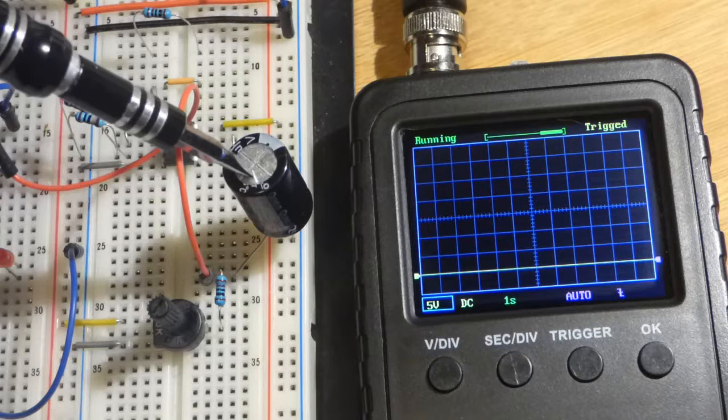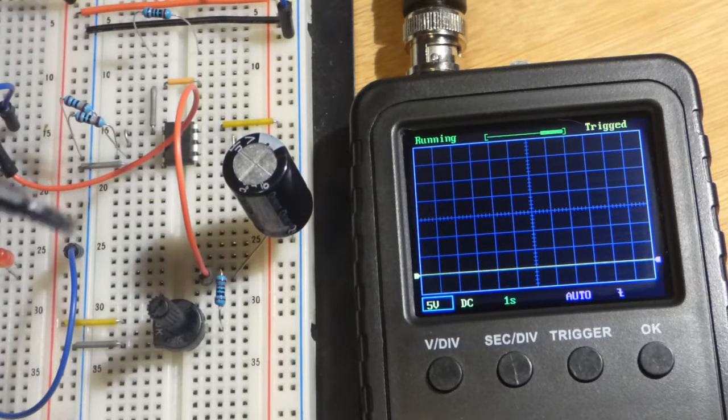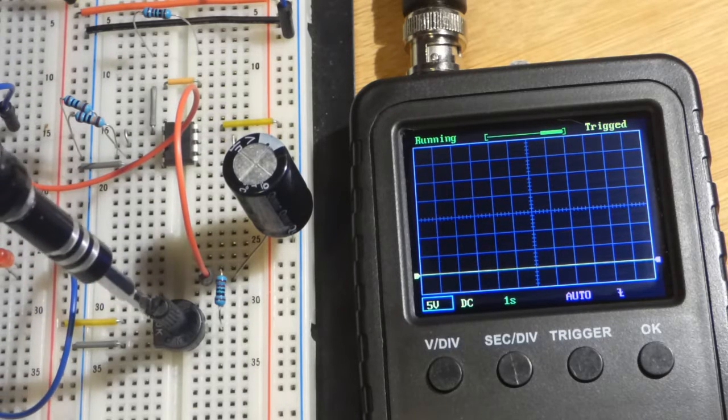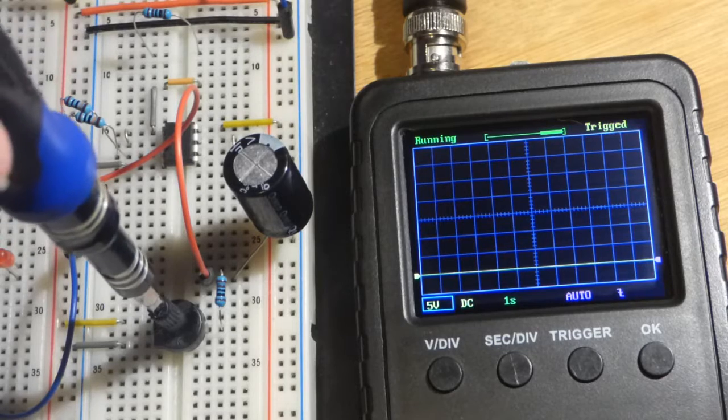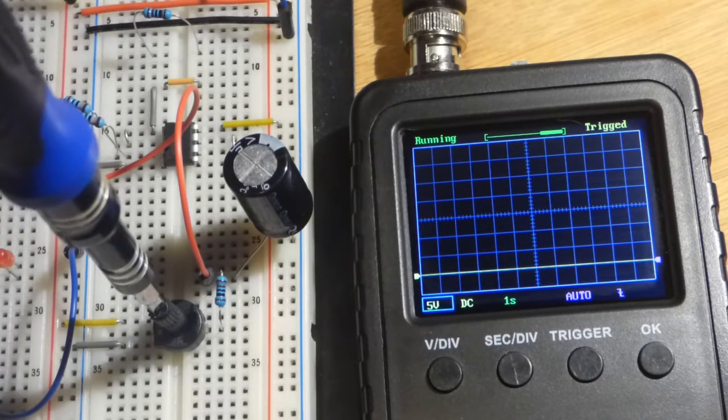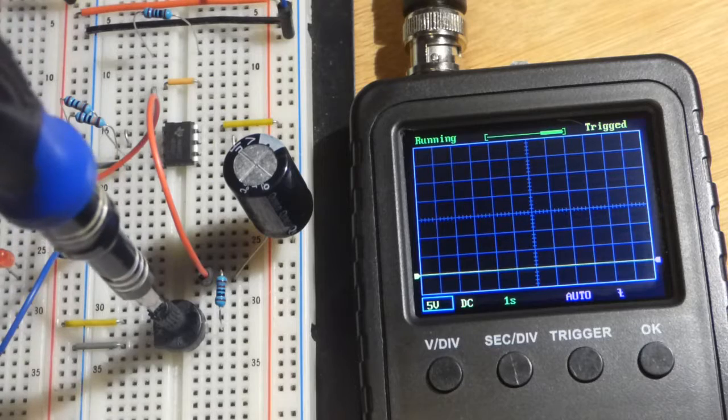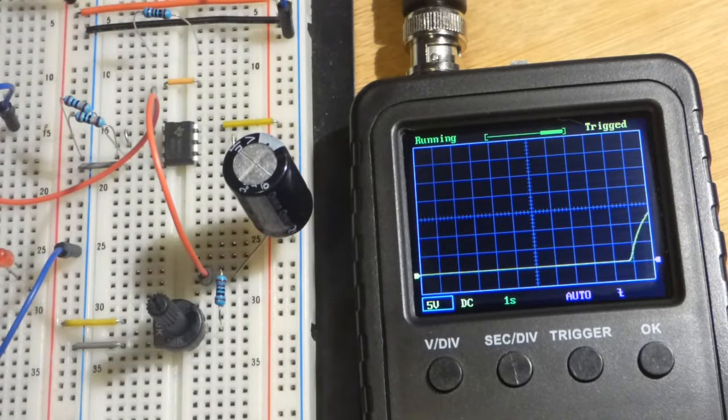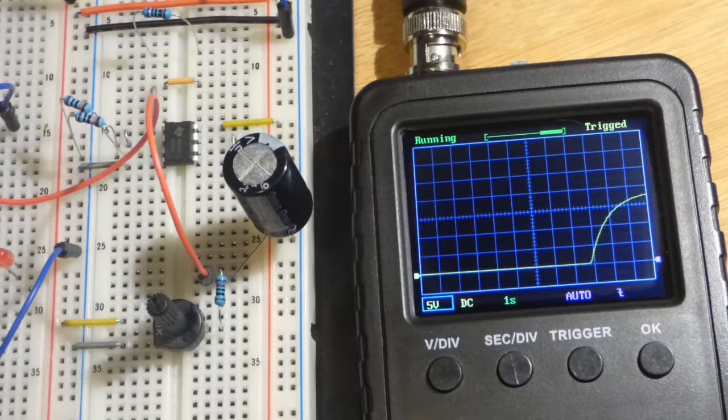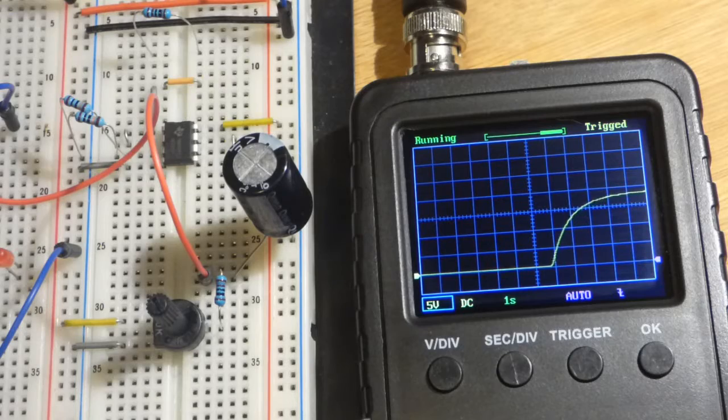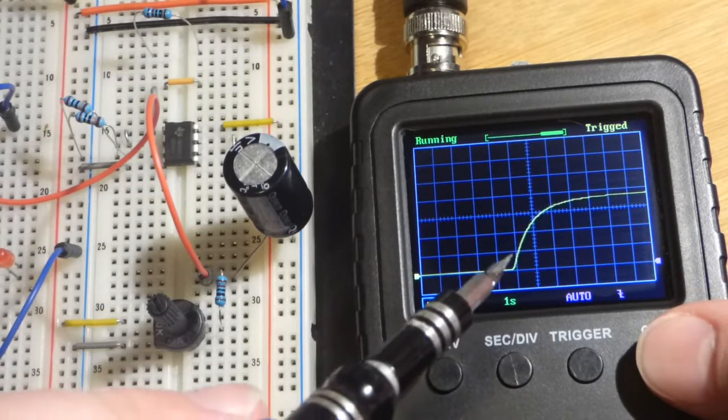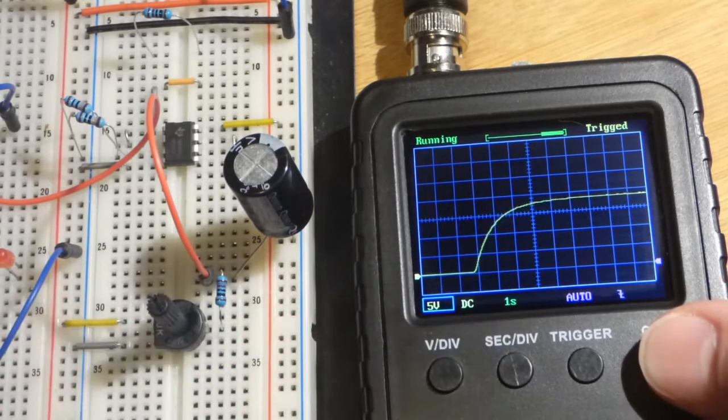We have the trim pot set down to zero volts out of 18. If I quickly turn it all the way up, it is trying to output 18 volts, but as you can see it takes the capacitor time to charge up to 18 volts.